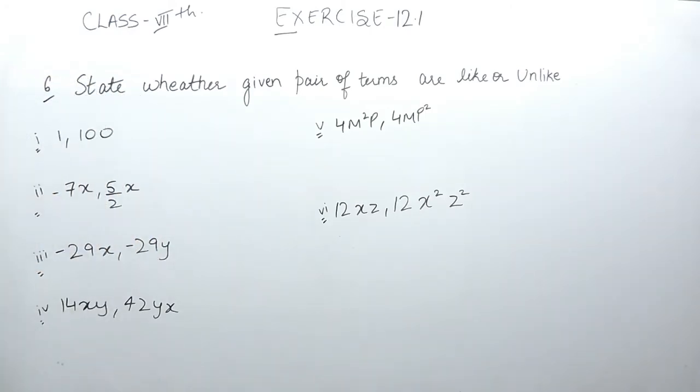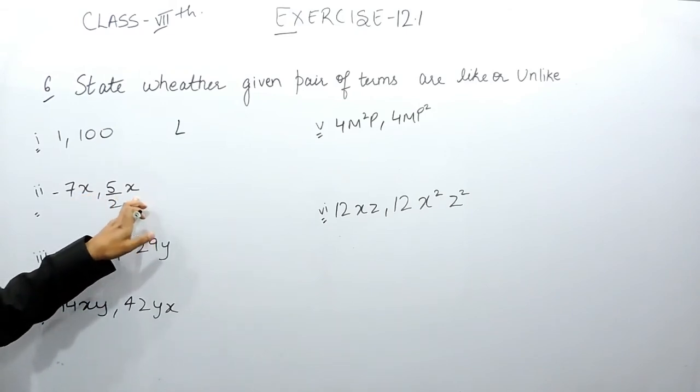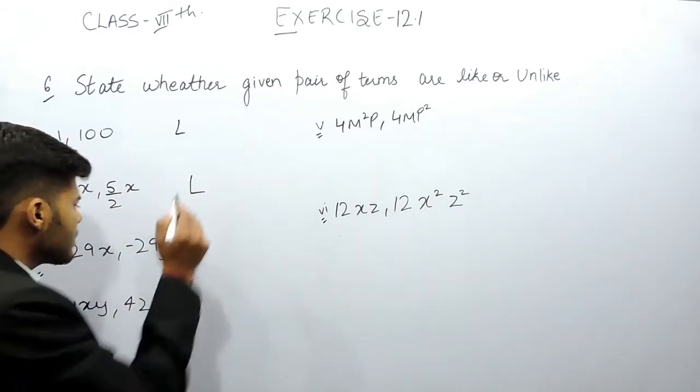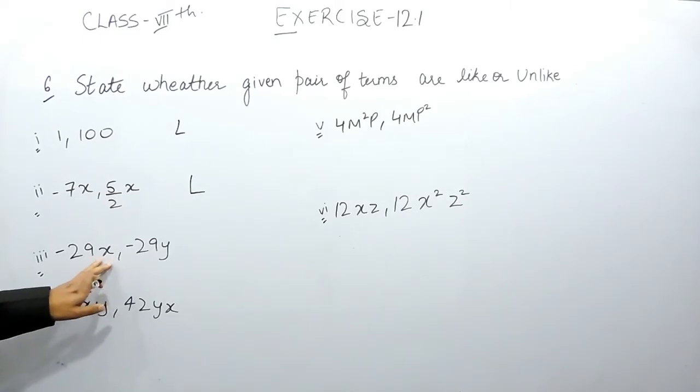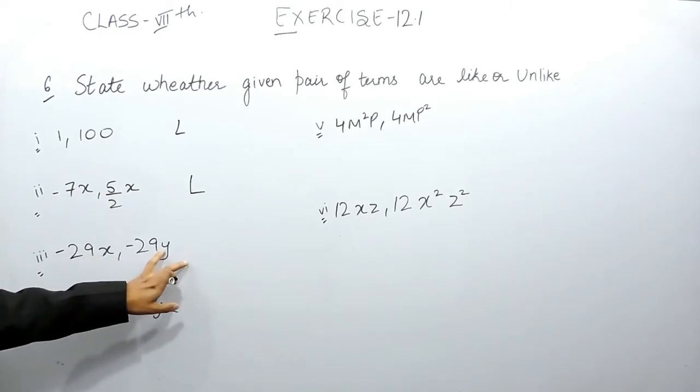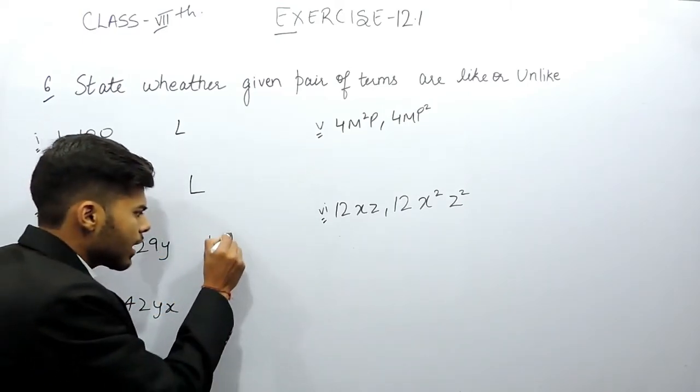Now in part 1, there is no variable quantity, so these terms are like terms. In part 2, the variable quantity is x and here also the variable quantity is x, so they are again like terms. In this one, the variable quantity is x and here the variable quantity is y, that's why they are unlike terms.